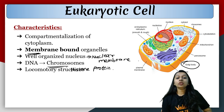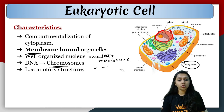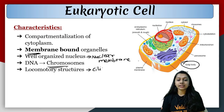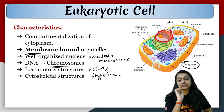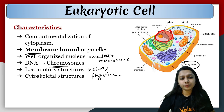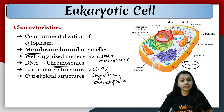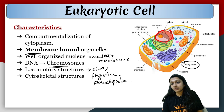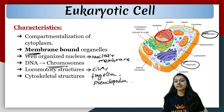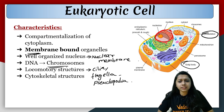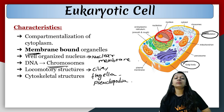Locomotory structures you can see in the case of eukaryotic cells: cilia and flagella. And many times there will also be pseudopodia. Next: cytoskeleton. As you can see in the image, cytoskeleton has many thread-like structures — microtubules and intermediate filaments — all present in the cytoplasm. We call this the cytoskeleton.